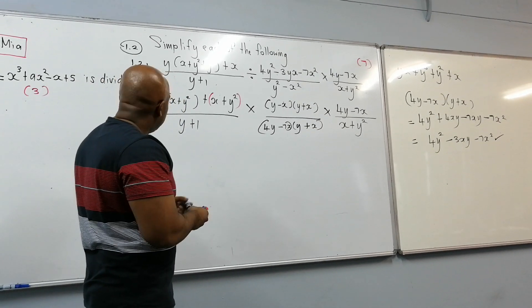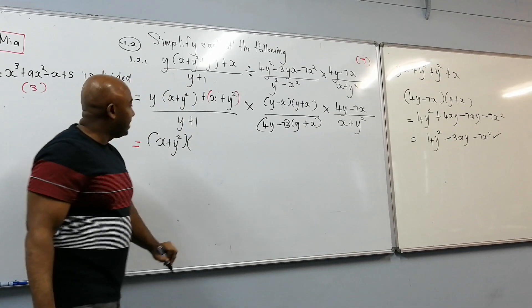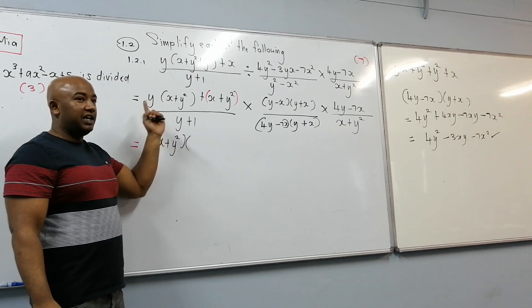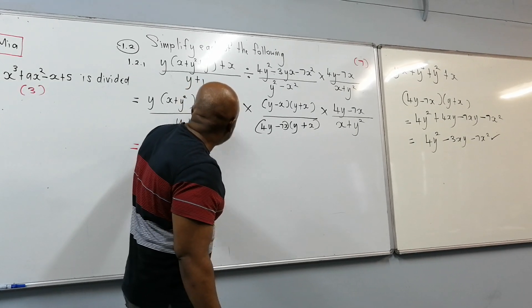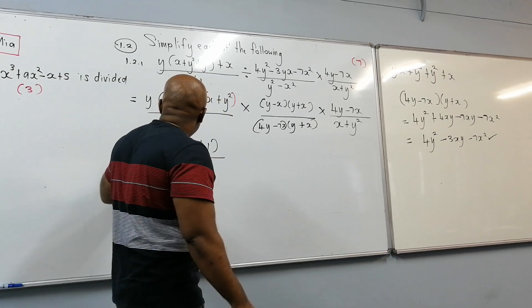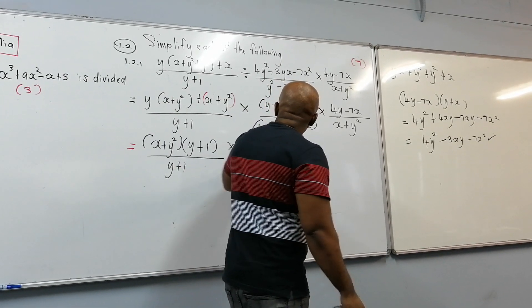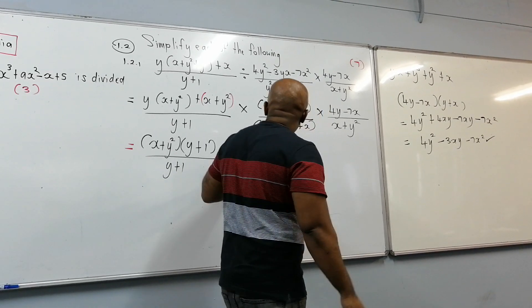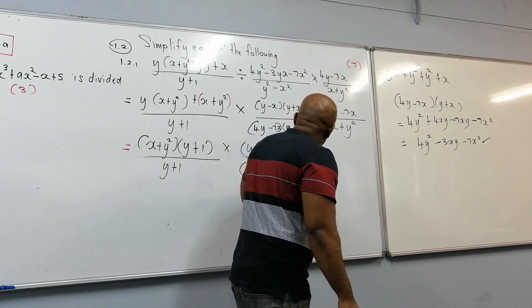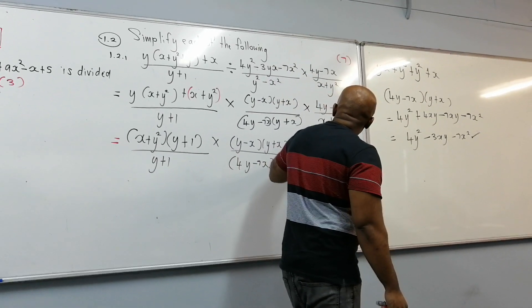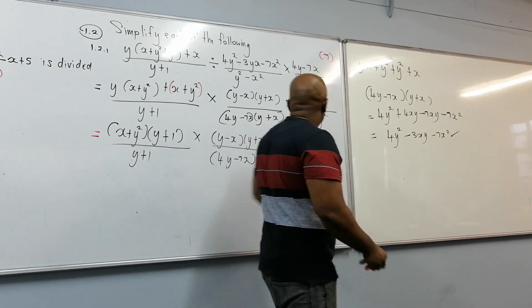So, now, if I take out my x plus y squared as a common factor, I'm taking out this. What have I left it now? Y. That's going to be y plus whatever is left here, which is 1. All divided by y plus 1 times y minus x, y plus x all divided by 4y minus 7x, all divided by x plus y squared.